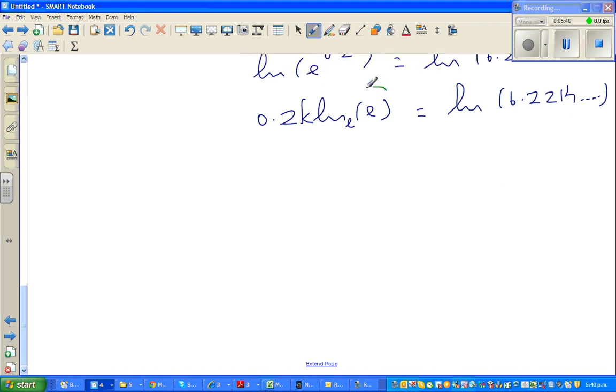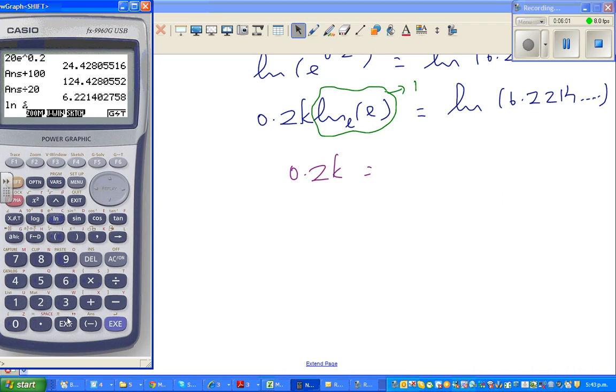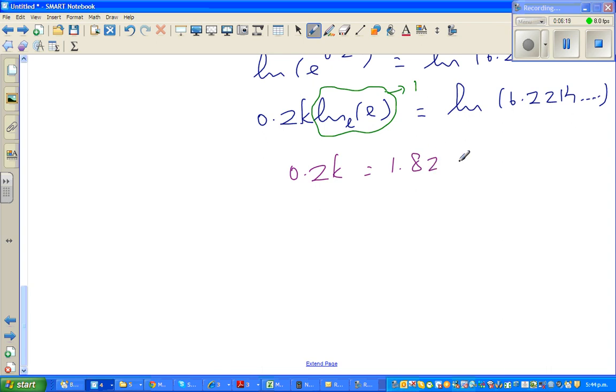So this will become 1. So the next step will become 1. So this is 0.2k is natural log of 6, so I'll do natural log of answer. Natural log of shift answer, it is 1.8279 dot dot dot, so k is 1.8279 over 0.2. So divide by 0.2 is 9.13.